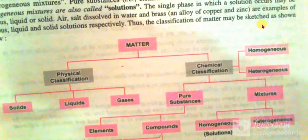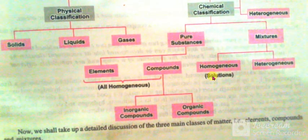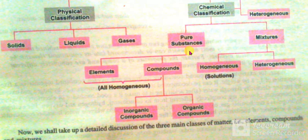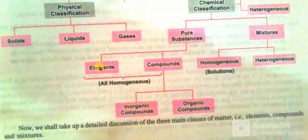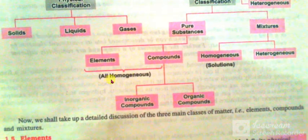Thus, the classification of matter may be sketched as shown in the figure. Matter has two types of classification: physical and chemical. In physical classification, matter is classified into three forms: solid, liquid, and gases. In chemical classification, matter is divided into pure substances and mixtures. Mixtures can be homogeneous or heterogeneous; homogeneous mixtures are also called solutions. Pure substances can be classified into elements and compounds, and all elements and compounds are homogeneous.